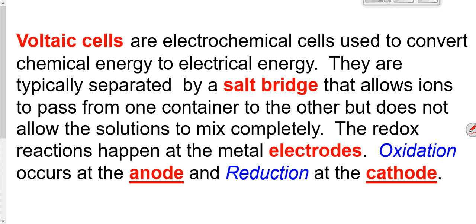Electrochemical cells are often called voltaic cells, named after Alessandro Volta, who did a lot of research into this. They're also called galvanic cells. They have a few distinct parts. We're going to separate our two half reactions by something called a salt bridge. A salt bridge is literally a bridge made out of salt — it allows ions to pass through but won't allow our reactants to mix. In the example where I put the piece of metal right into the solution, those electrons traveled right at the site, so we never got to use them — so we have to separate them.